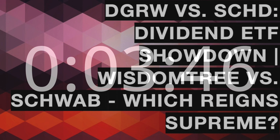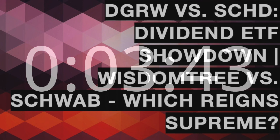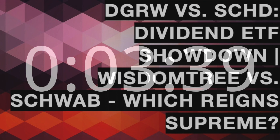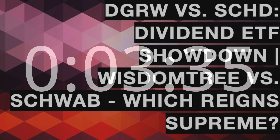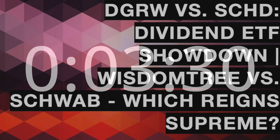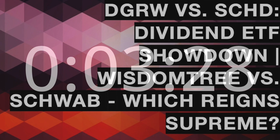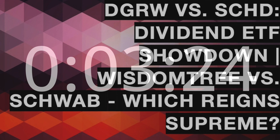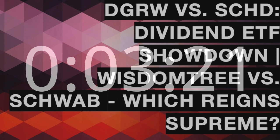SCHD, with its commitment to high-dividend yielding stocks, may exhibit a different sector profile. Sectors like utilities, consumer staples, and real estate investment trusts (REITs) are often associated with stable cash flows and higher dividend yields, making them more prevalent in SCHD's portfolio. This divergence in sector exposures reflects the fund's focus on providing a consistent stream of income through dividend payments.